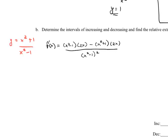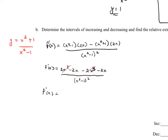Expanding the numerator: the first product gives 2x cubed minus 2x. Be careful with the negative sign — the second product gives minus 2x cubed minus 2x. The 2x cubed terms cancel, leaving minus 2x minus 2x, which is minus 4x. So the simplified derivative is f prime of x equals negative 4x over x squared minus 1 quantity squared.